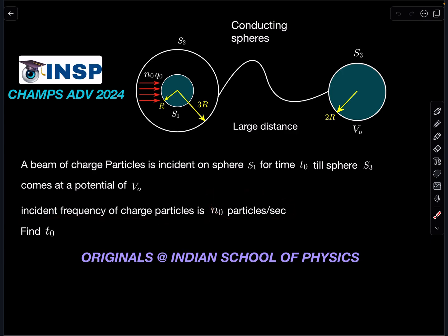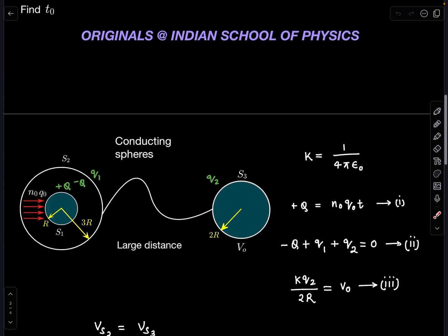This question is pretty easy and straightforward, just a concept application. Some students got confused and thought it is related to photoelectric effect. Please remember, it is clearly mentioned that n₀ particles per second are incident. It is nowhere related to photoelectric effect. We are simply charging the inner sphere S1 at this rate, and the charge particle has charge q₀. Let's discuss this problem.